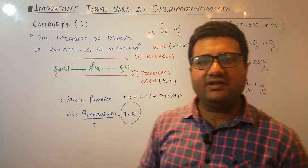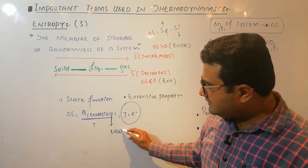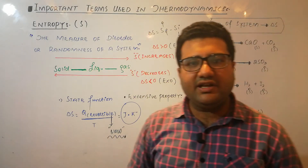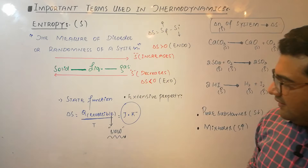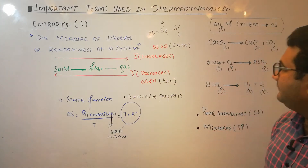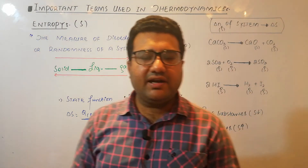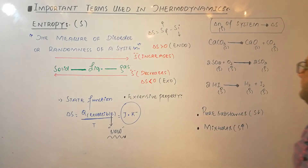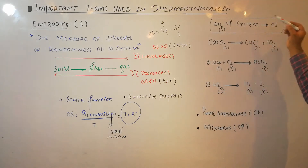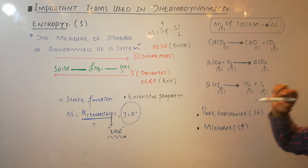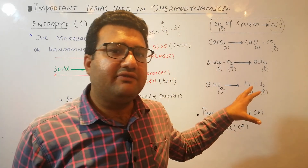The unit of entropy is joules per Kelvin. When determining whether entropy increases or decreases in a reaction, use delta N_g — the difference in number of moles of gases. If delta N_g is positive (more moles of gas in products), entropy increases and delta S is greater than zero. If delta N_g is negative (fewer moles of gas), entropy decreases and delta S is less than zero. If delta N_g equals zero, entropy remains constant.